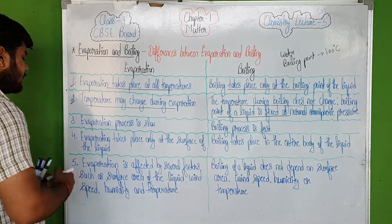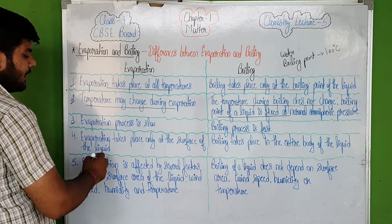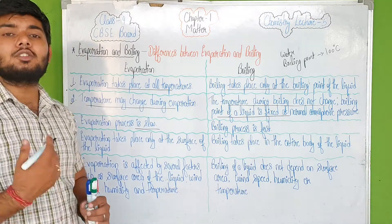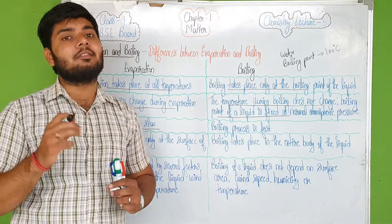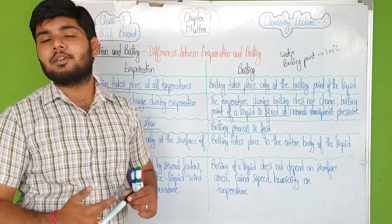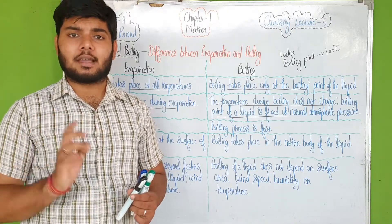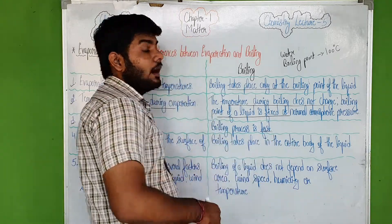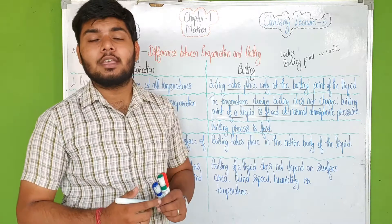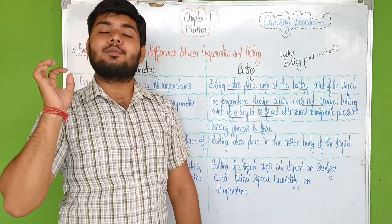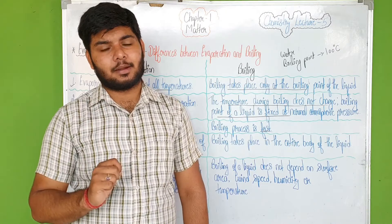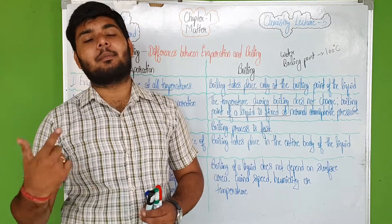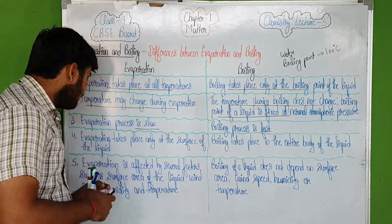Moving on to the third point: the evaporation process is slow. When liquid is converted to gas by evaporation, it happens very slowly. If I talk about boiling, the boiling process is fast. Because we provide a fixed temperature, the conversion of liquid into vapors happens very rapidly.